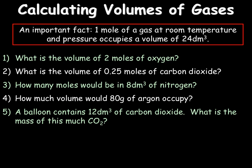So in order to work out the volume of 2 moles of oxygen we're going to presume this is at room temperature and at room pressure. So therefore we need to do 2 times 24 giving us 48 dm cubed. For the next question we need to do 0.25 moles of our carbon dioxide times by our 24. This gives us 6 dm cubed.